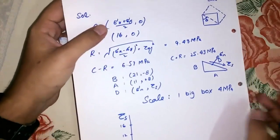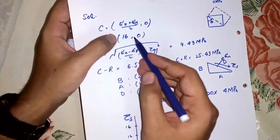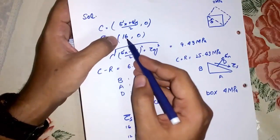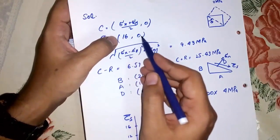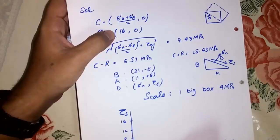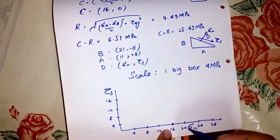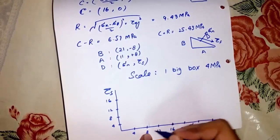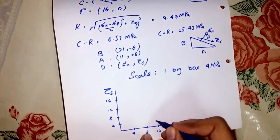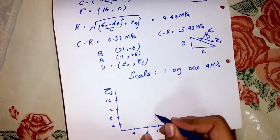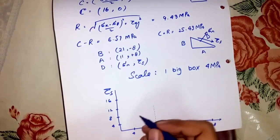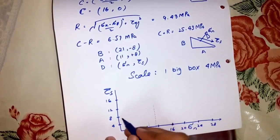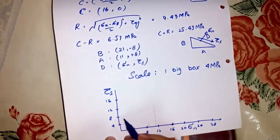Now the center of the circle has coordinates (16, 0), so the center would be plotted here at 16 and 0. The point with coordinates (11, +8) would be plotted here.